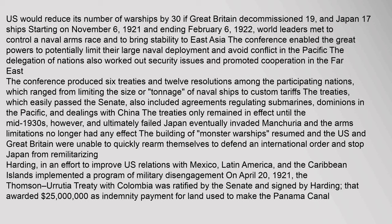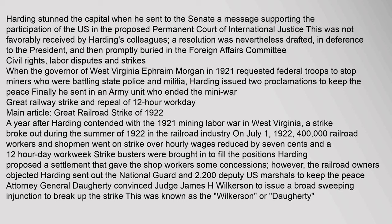Harding, in an effort to improve U.S. relations with Mexico, Latin America, and the Caribbean islands, implemented a program of military disengagement on April 20, 1921. The Thompson-Urrutia Treaty with Colombia was ratified by the Senate and signed by Harding, awarding $25 million as indemnity payment for land used to make the Panama Canal. Harding stunned the Capitol when he sent to the Senate a message supporting U.S. participation in the proposed Permanent Court of International Justice, which was not favorably received by his colleagues.